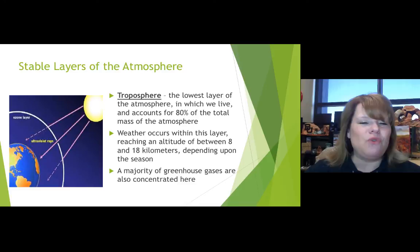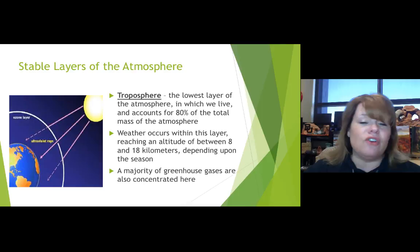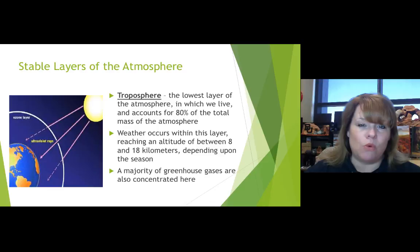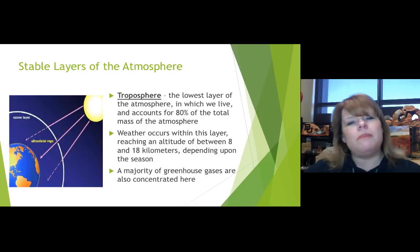The troposphere is where all the action happens that you and I can relate to. It's the lowest layer of the atmosphere, extending from the base of the stratosphere down to the earth's surface. We live in this area, and it accounts for 80% of the total mass of the atmosphere. Weather occurs within this layer, and it reaches an altitude between 8 and 18 kilometers depending on where you are on the earth.